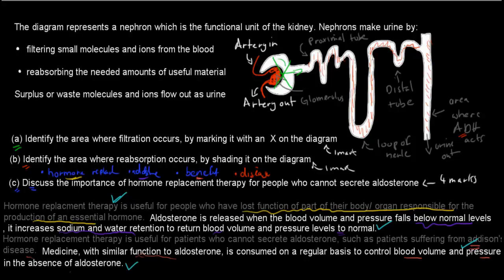It helps them restore their blood volume and pressure back to normal. That would be your four marks out of four. You get a mark for identifying correctly the X and also for shading reabsorption area. So six marks total, six out of six for this.